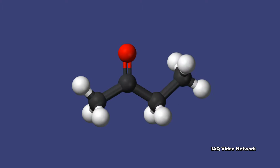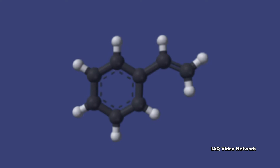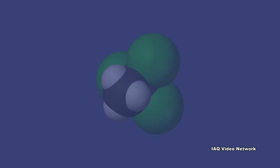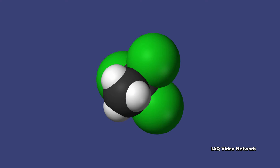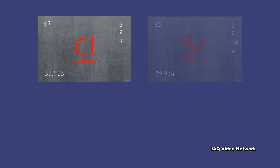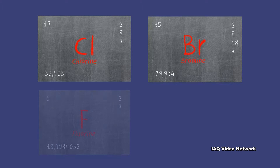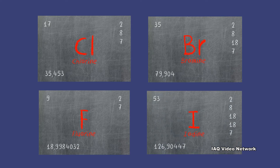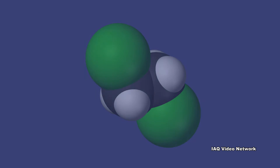Oxygenated solvents contain oxygen and are synthesized from other chemicals. Hydrocarbon solvents contain hydrogen and are derived mainly from petroleum. Halogenated solvents contain one or more of the halogen elements — chlorine, bromine, fluorine, or iodine. Most halogenated solvents contain chlorine and are then called chlorinated solvents.